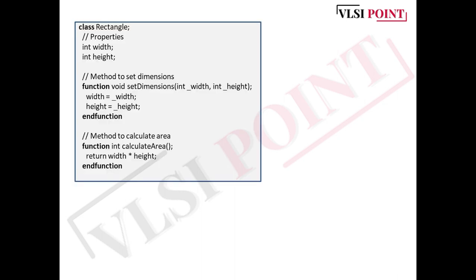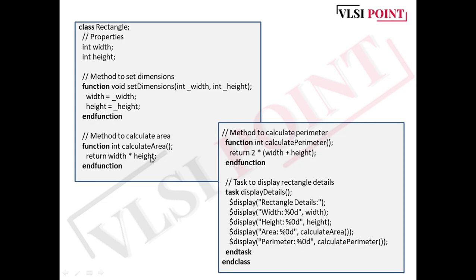We'll see this example and then move towards object creation. Here we have defined a Rectangle class with two properties: width and height. The first method is setDimensions to set the width and height of the rectangle. Another method is calculateArea, with the formula area equals width times height. We have calculatePerimeter, which returns 2 times width plus height.